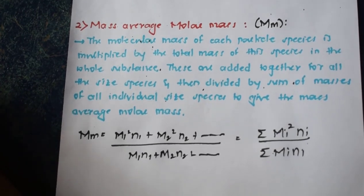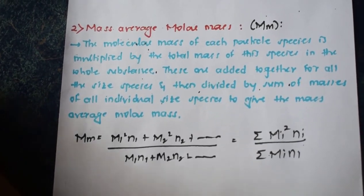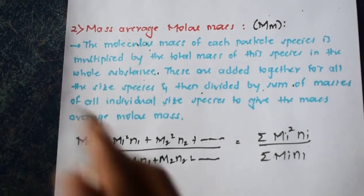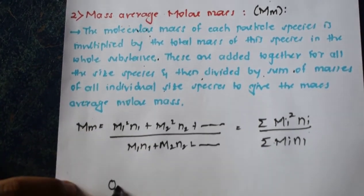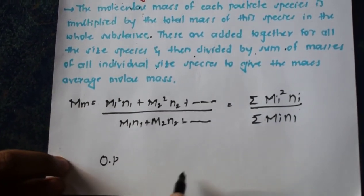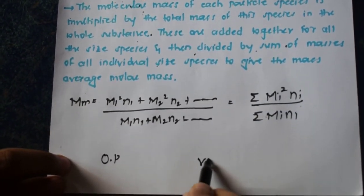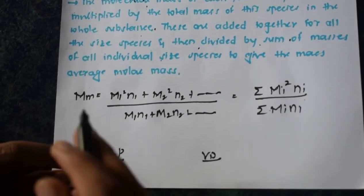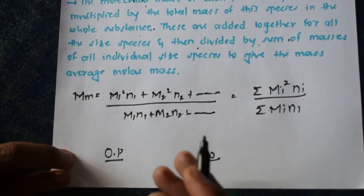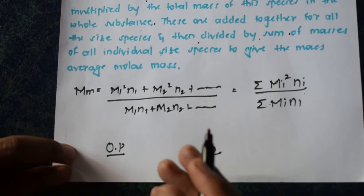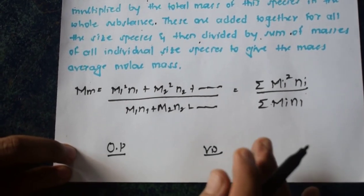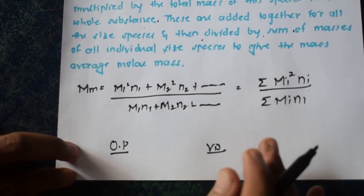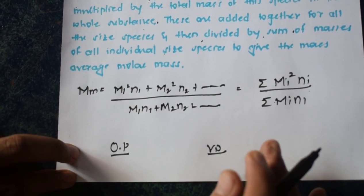In the next class we are going to discuss how to determine molecular weight of macromolecules. There we have two methods: one is the osmotic pressure method and the other is the viscosity method. Using these two methods we can determine the molecular weight. If you like this video please give a thumbs up, and if you'd like to share, share with your friends. Thank you.